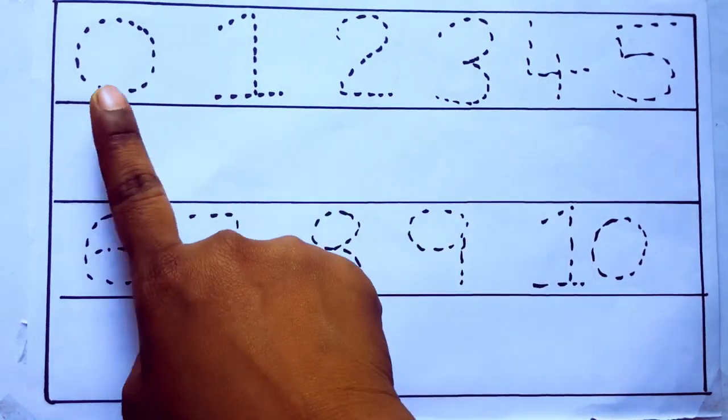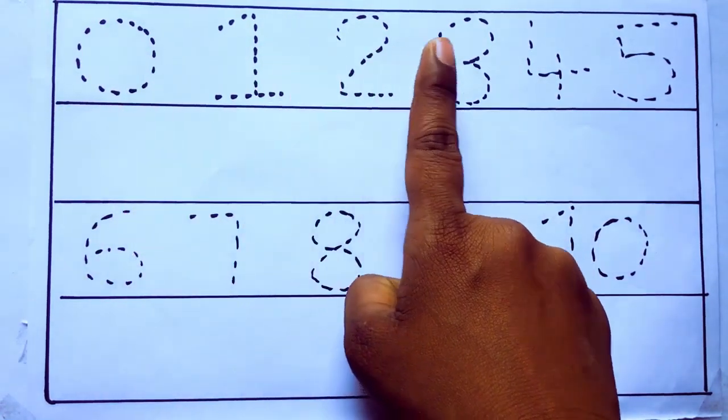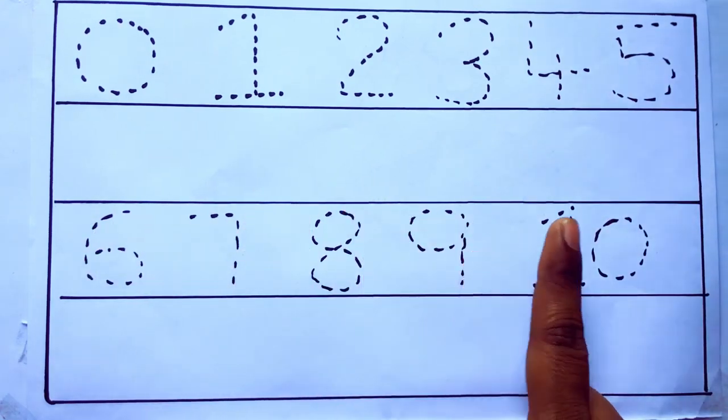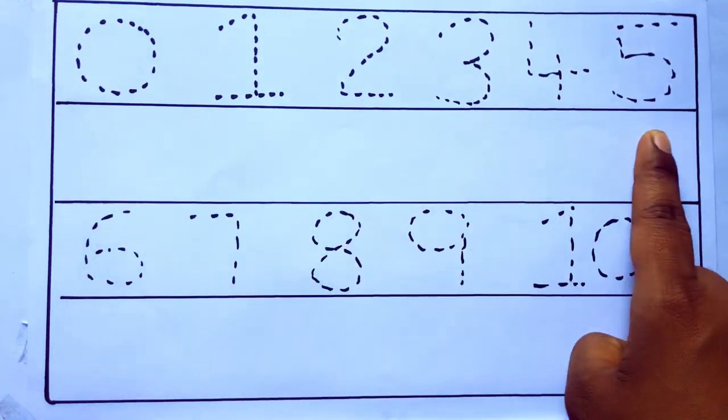0 to 10: 0, 1, 2, 3, 4, 5, 6, 7, 8, 9, 10 and rewriting the numbers.